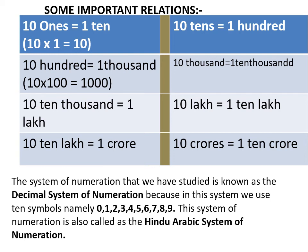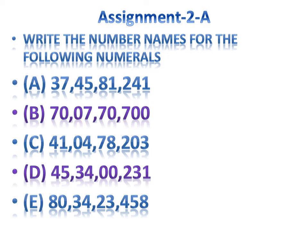The system of numeration we have studied is known as the decimal system of numeration, because in this system we use ten symbols: zero, one, two, three, four, five, six, seven, eight, and nine — ten symbols in total. This system is also called the Hindu-Arabic system of numeration. This is what we have learned today.